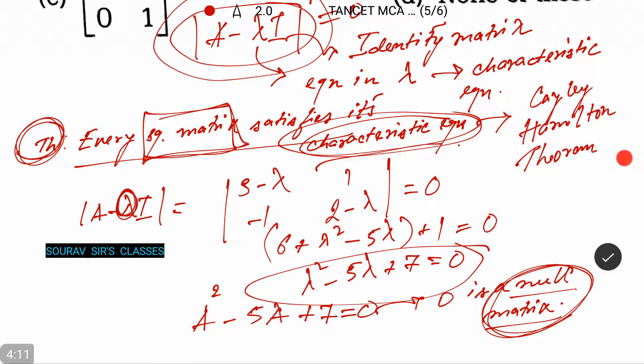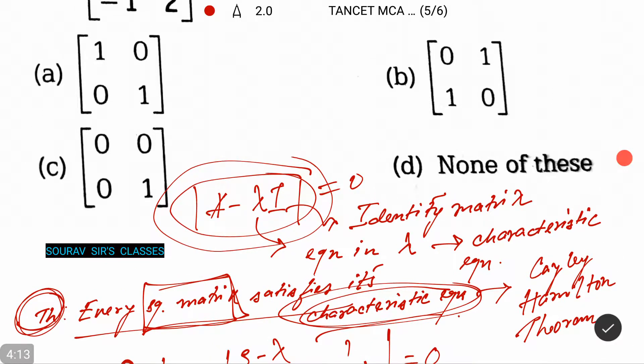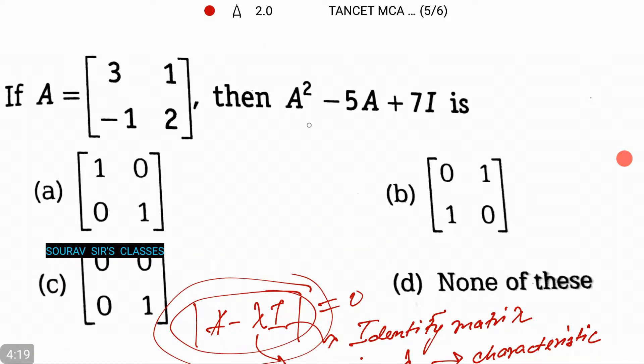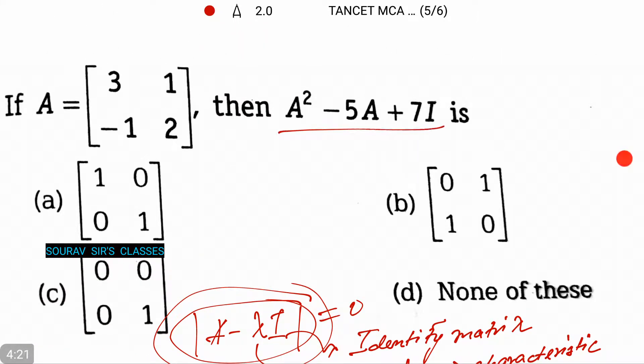Right, so what we have is that this equation A² minus 5A plus 7I will give us none of these. Sorry that was a bit short.